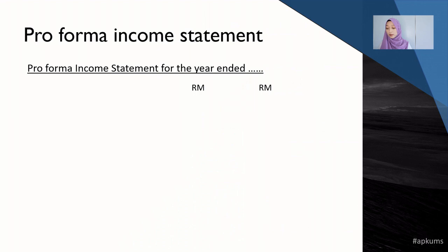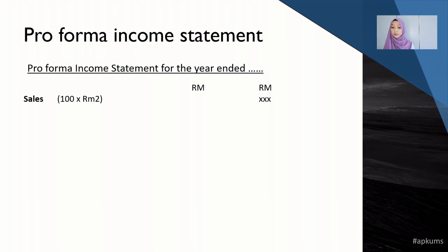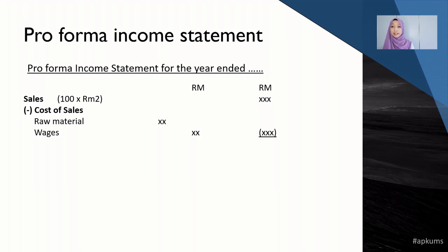The first financial statement is the income statement. You start with the total sales you'll be getting over a certain period, for example one month. Then you deduct the total sales with the cost of goods sold — the cost of producing your products. Cost of sales includes cost of raw materials, cost of wages, and anything directly related to producing your products or services. When you deduct sales with the cost of producing your goods, you get the gross profit.